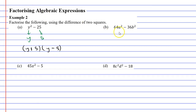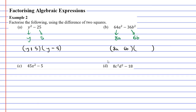Moving on to question B, which is more complicated but not too bad. Same deal — I'm going to square root both terms. The square root of a² gives a, and the square root of 64 is 8, so I get 8a. Then I square root 36, which is 6, and square root b², which gives b. So I get 6b. I write two sets of brackets each containing 8a and 6b. One bracket has a minus and the other has a plus.